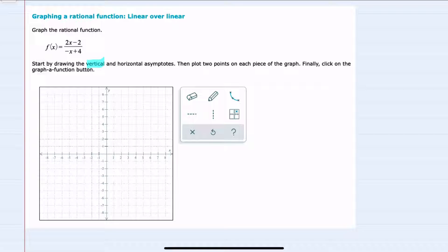We're going to start by finding the vertical and horizontal asymptotes to graph, and then we're going to look at two points in each piece of the graph that we can connect to graph the function.